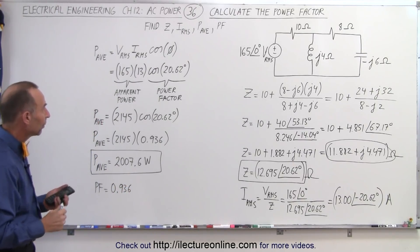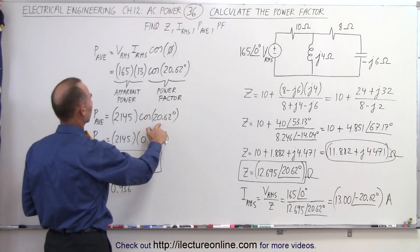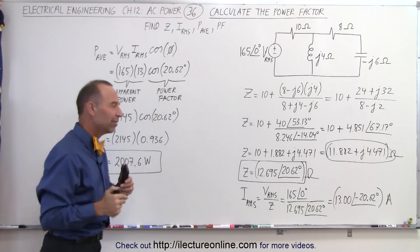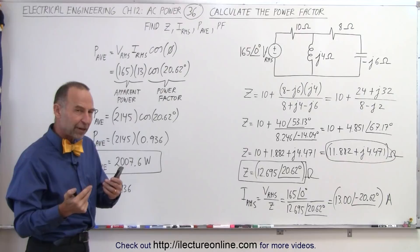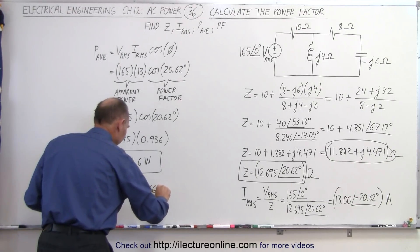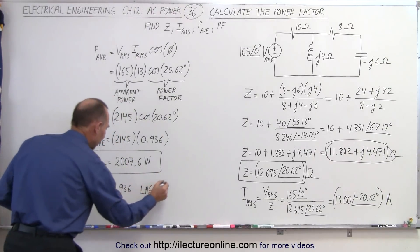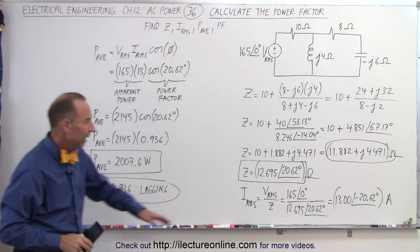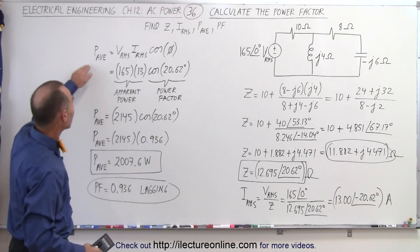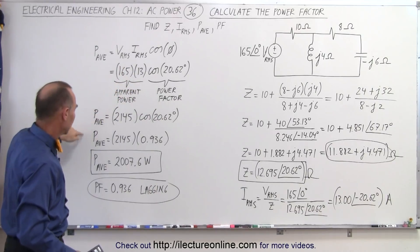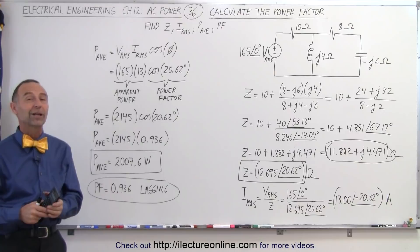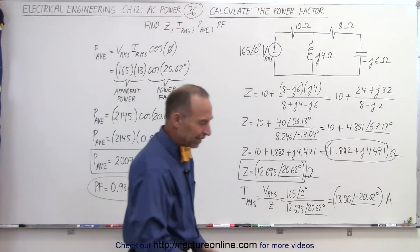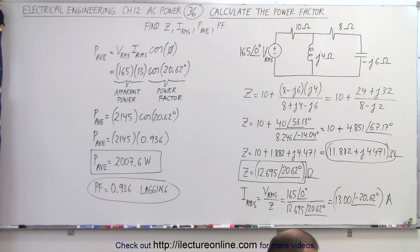The power factor is 0.936. Is it leading or lagging? The phase angle of the impedance is positive, which means voltage leads the current. For the power factor that means it is lagging — a lagging power factor — because the current is lagging, and the current is what decides the power. So the result takes a little more work when given a circuit: first get the impedance, then the voltage and current, then apply the average power equation to get the power factor and apparent power.